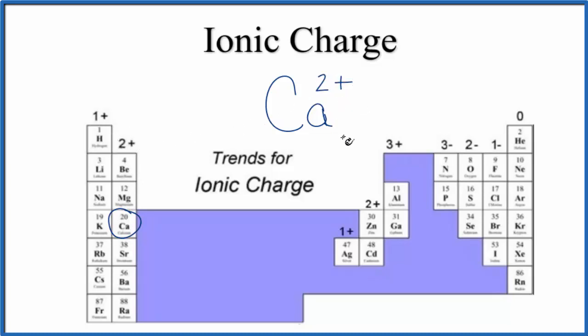That means when it bonds to other elements like chlorine or fluorine, it'll lose two valence electrons. We can also look at the electron configuration, and that'll help us figure out why it's 2 plus.